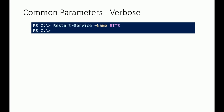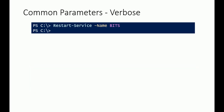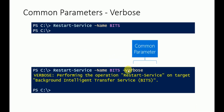Let's move to the next slide. Here we look at the Verbose common parameter. The example command is Restart-Service -Name bits. When we run this without -Verbose, we get no output. But when we add -Verbose, it gives output like: 'Performing the operation to restart the service on target computer — Background Intelligent Transfer Service (BITS).' So Verbose gives you more information about what the result was, and this is why it's called a common parameter.